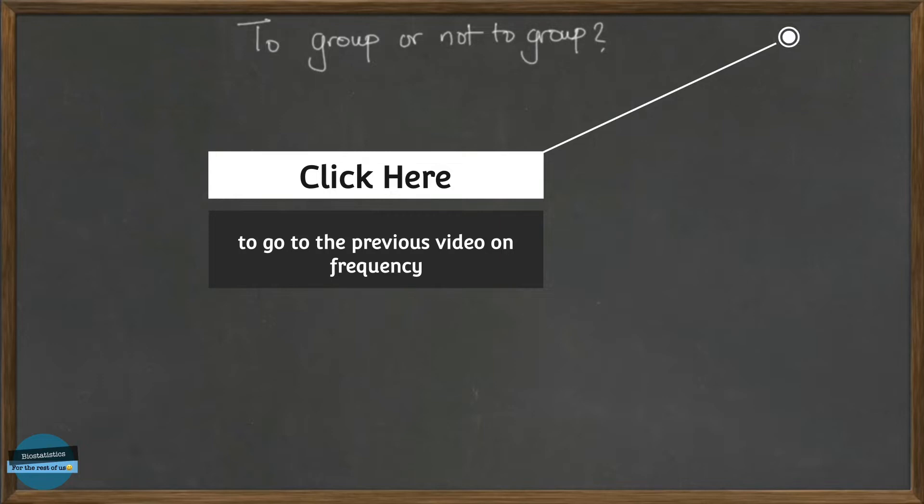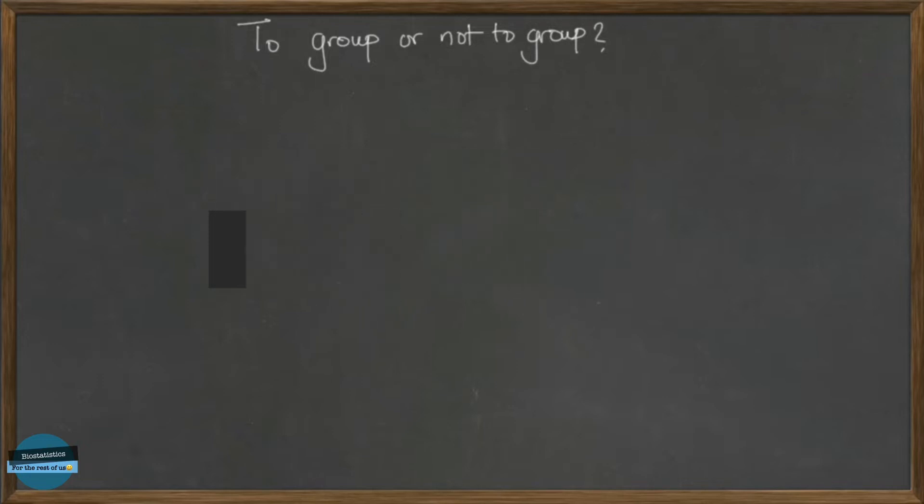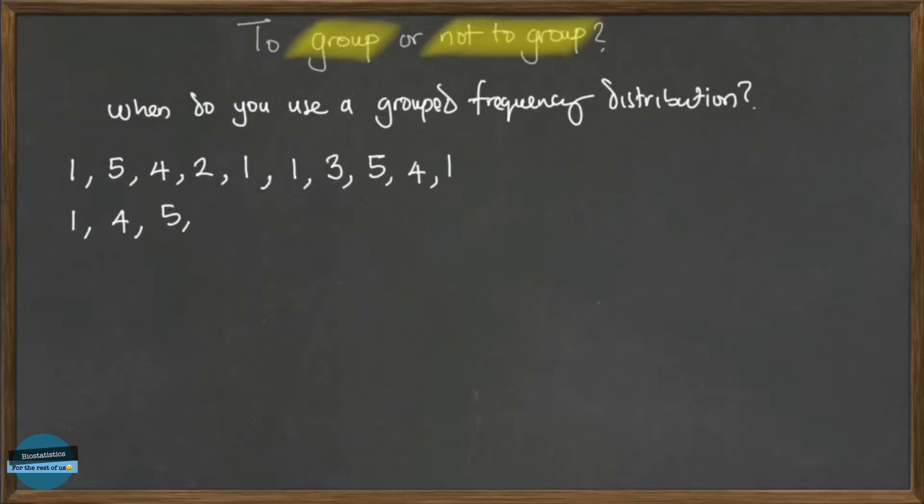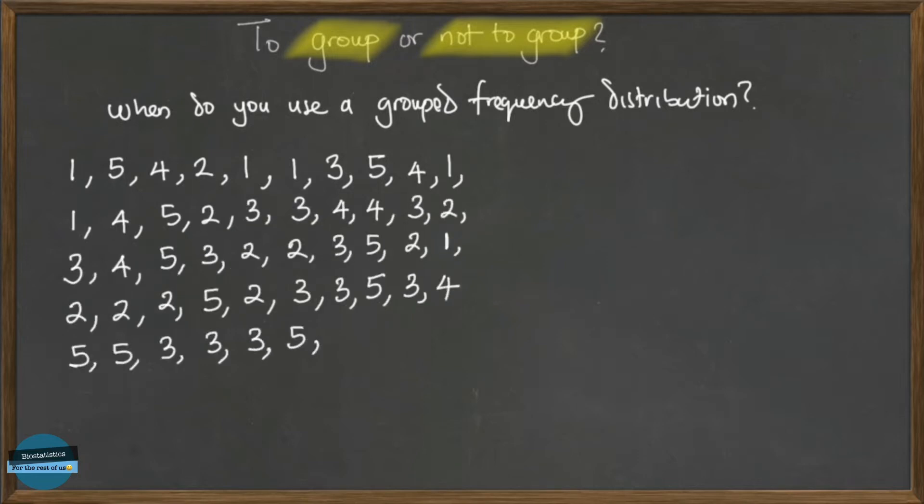But at what point in time would an ungrouped frequency distribution not work? When do you use a grouped frequency distribution? What kind of data would you have that would be unreasonable for you to summarize using an ungrouped frequency distribution?